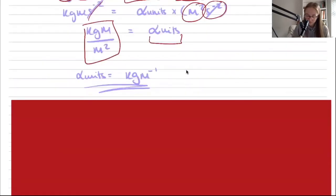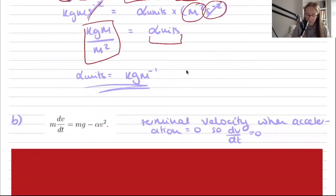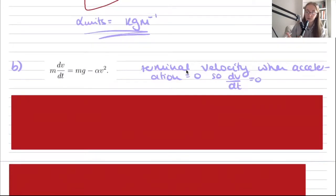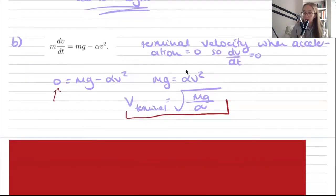For part b, terminal velocity occurs when acceleration is zero, so dv/dt equals zero. Setting zero equal to mg minus alpha v squared and rearranging gives the expression for terminal velocity.